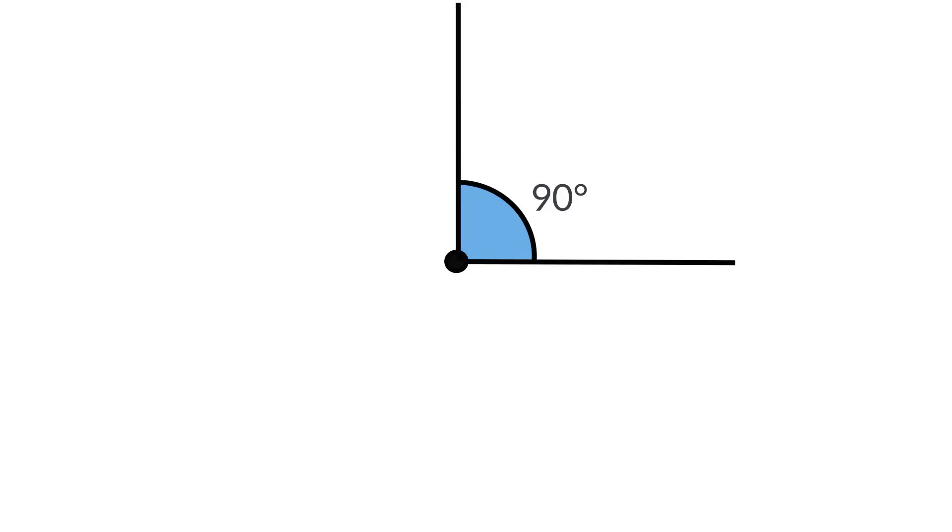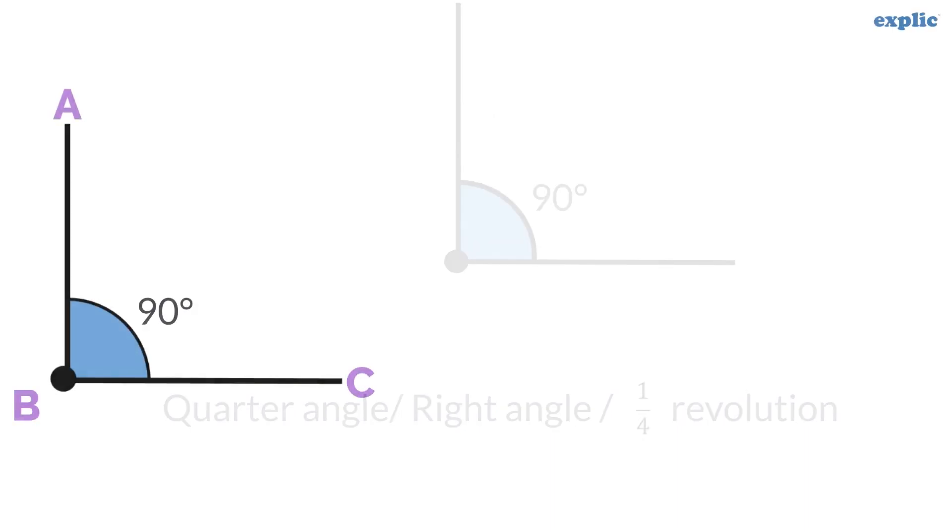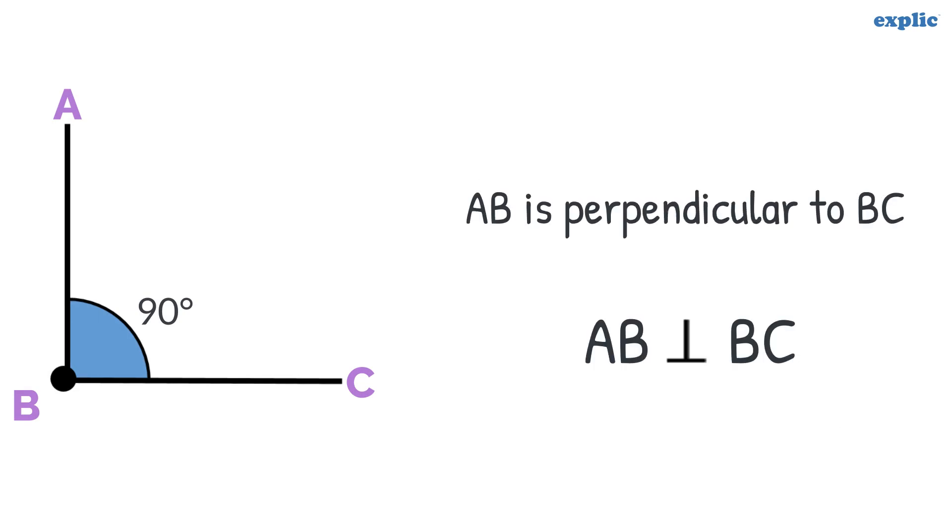A right angle can also be called a quarter angle or 1 by 4th revolution. If two lines are at the right angle, they are called perpendicular. Here, line AB is perpendicular to line BC. It is also represented as an inverted T shape.